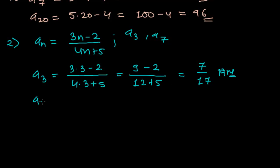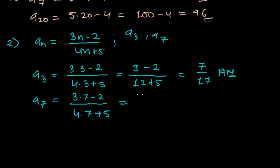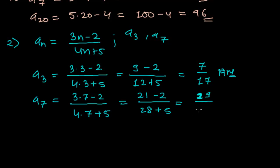For a7, again I'm just replacing n by 7. So (3×7 - 2) divided by (4×7 + 5). That is 21 minus 2, divided by 28 plus 5. So 21 minus 2 is 19, and 28 plus 5 is 33. So a7 = 19/33. We got both required values.